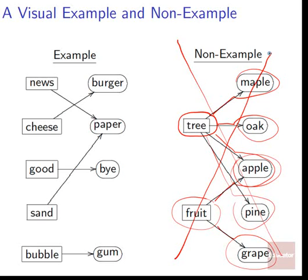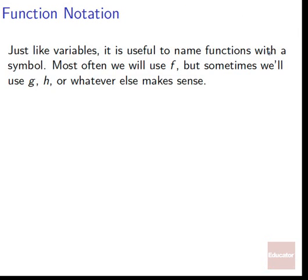One input will only give us one output. And as long as we keep putting in that same input, it can only give us the same output. Just like variables, it's useful to name functions with a symbol. The symbol we'll most often use is f, but sometimes we'll also use g, h, or whatever makes sense depending on the context.